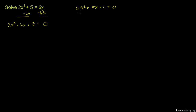The quadratic formula tells us that if we have something in standard form, the roots are going to be negative b, plus or minus the square root of b squared minus 4ac, all over 2a.